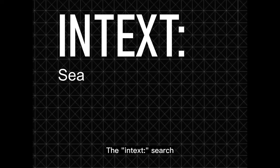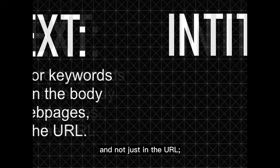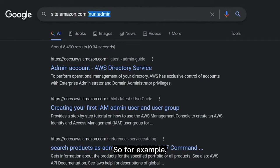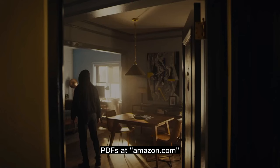Other search operators similar to 'inurl:' are 'intext:' and 'intitle:'. The 'intext:' operator searches for a keyword anywhere in the body of web pages, while 'intitle:' searches in the titles of web pages — very handy for finding login pages. Another cool one is the 'filetype:' operator. For example, specifying 'filetype:pdf' will list all publicly available PDFs at Amazon.com.